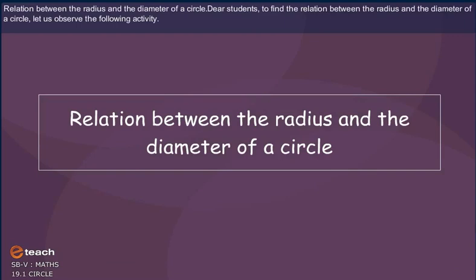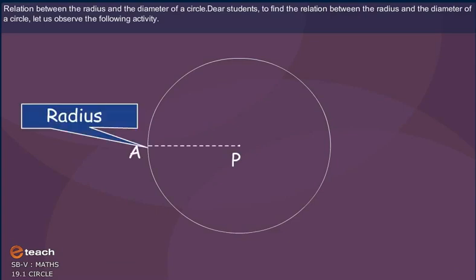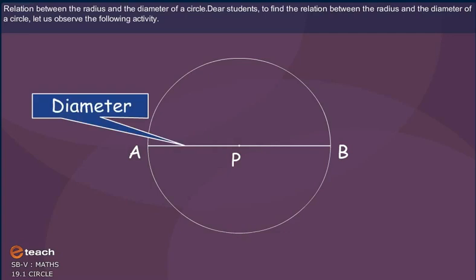Relation between the radius and the diameter of a circle. Dear students, to find the relation between the radius and the diameter of a circle, let us observe the following activity.